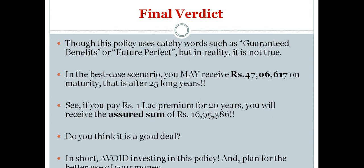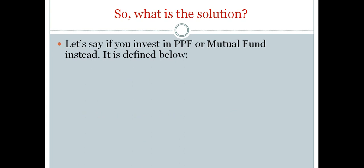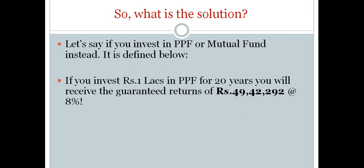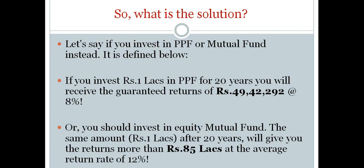You should avoid investing in this policy and plan for a better use of your money. If you invest in PPF, Rs. 1 lakh per annum for 20 years gives you a guaranteed return of Rs. 49,42,292 at 8% — a guaranteed rate of return. And if you invest in a good equity mutual fund with the same amount, after 20 years you will get Rs. 85 lakhs at an average rate of return of 12%. You should consider investing in such instruments instead of endowment policies like ICICI Prudential Future Perfect.